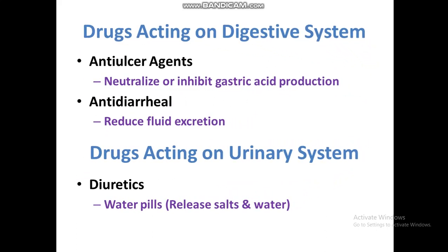Drugs acting on the digestive system. Anti-ulcer agents neutralize or inhibit gastric acid production and protect the mucosal layer. They are also called H2 antihistamines because they block H2-type histamine receptors, reducing gastric acid secretion. Anti-diarrheal drugs reduce fluid excretion — they reduce water excretion in stool and retain water inside the body.